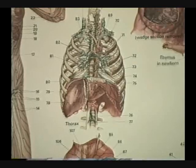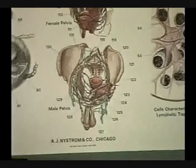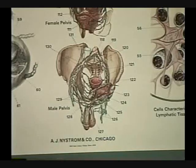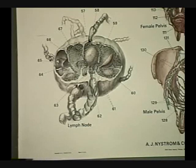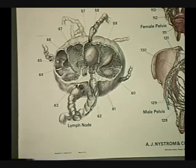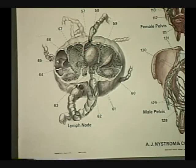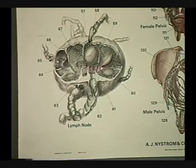Looking at this lymph node here gives a good view of what was shown in lecture today. The afferent vessels bring the fluid in; it goes through the cortex where the T cells are and the germinal centers, so the T cells can identify the foreign invaders and the B cells can make antibodies against them. Down in the medulla, macrophages can engulf them, and the clean lymph comes out through the efferent vessels.